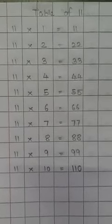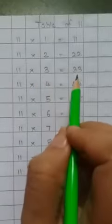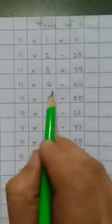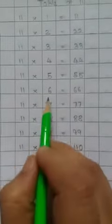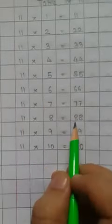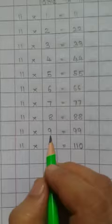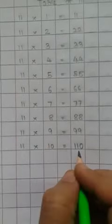Okay, let's start. 11 1s are 11, 11 2s are 22, 11 3s are 33, 11 4s are 44, 11 5s are 55, 11 6s are 66, 11 7s are 77, 11 8s are 88, 11 9s are 99, 11 10s are 110.